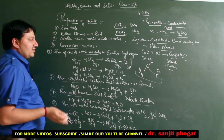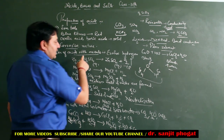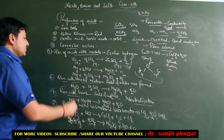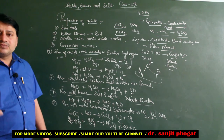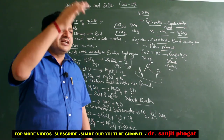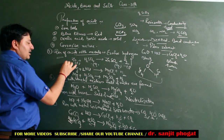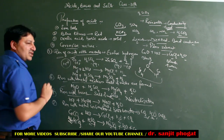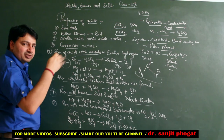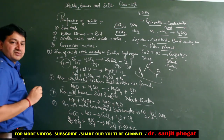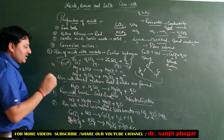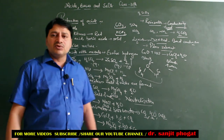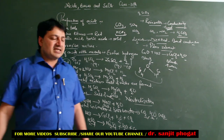एक important question - Acids के साथ Metals react करते हैं तो Hydrogen Gas liberate क्यों होती है? Metals की आदत है कि वो तुरंत electrons दे देते हैं। Acid में H positive ions होते हैं। Metal electrons liberate करता है, वो electrons H positive लेता है, H बन जाता है, फिर दो H मिलकर H2 gas बन जाती है और evolve होती है। यही कारण है Hydrogen Gas के evolution का।